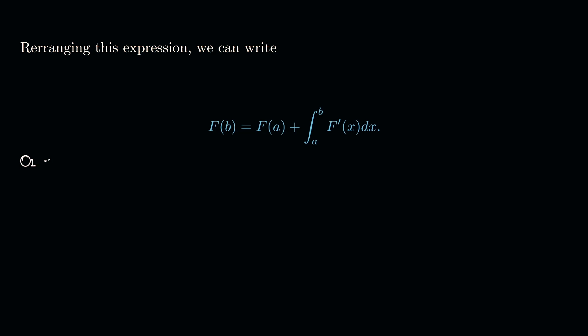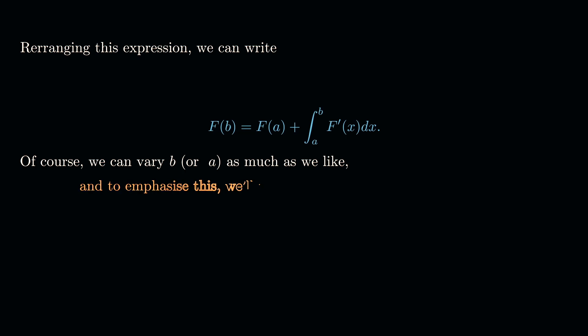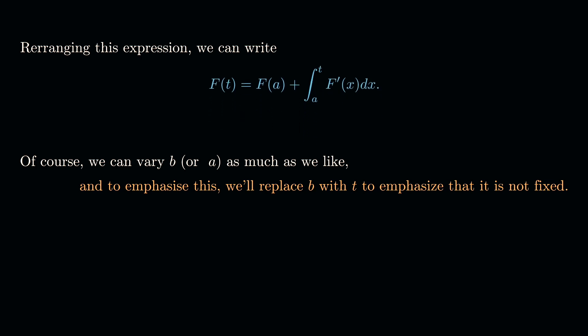We can vary b or a as we like. To emphasize that b is a variable, we'll replace b with t. Now, if we suppose the function is smooth — meaning we can differentiate it any number of times — we can apply the fundamental theorem of calculus repeatedly.